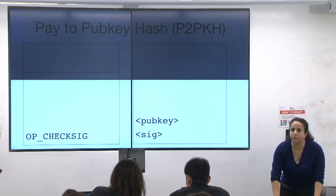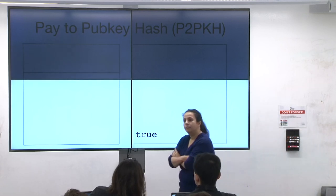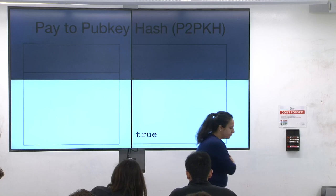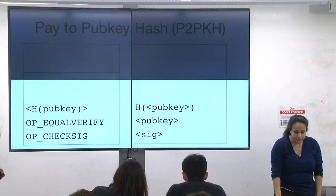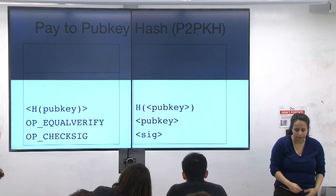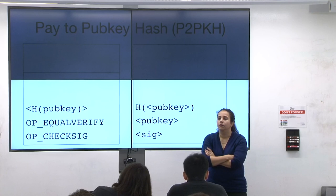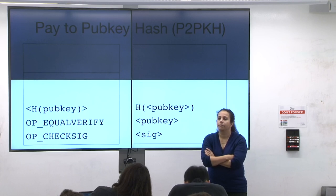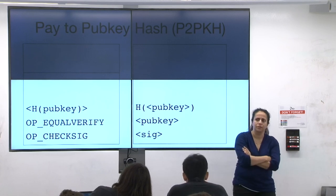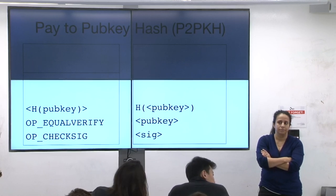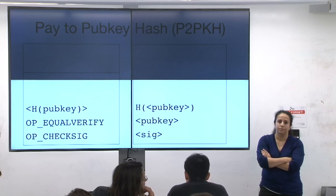Is there a significance in having OP_EQUALVERIFY before OP_CHECKSIG? It's faster to verify that two hashes are equal — OP_CHECKSIG takes a lot more CPU time. So if you're going to fail, fail the cheaper check first. Every node on the network runs the Bitcoin script interpreter, which is consensus-critical: if two nodes have slightly different script interpreters, the network would have a consensus failure.